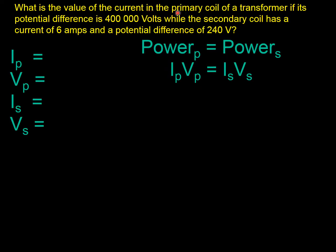IP, the current in the primary coil, what is it? That's what we want to know. Now, what is the current? We don't know. Okay, its potential difference is 400,000 volts, so that's your VP, your current on the secondary, 6 amps, and the potential difference is 240 volts. So those are the numbers. Let's put them into the equation. It looks like that.